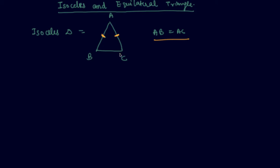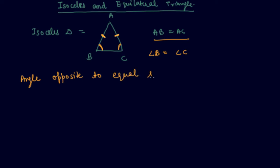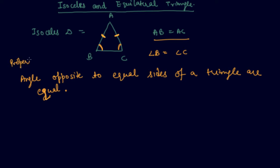Based on this, if these two sides are equal, the angles opposite to these sides — angle B and angle C — will also be equal. This is a property of isosceles triangles: the angles opposite to equal sides of a triangle are equal. So angle B equals angle C, which are opposite to AC and AB respectively.